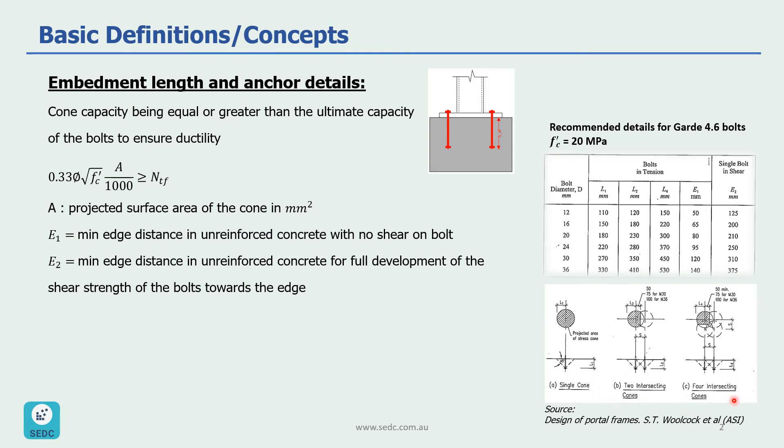We can calculate L1 which is embedment length for single cone, L2 embedment length for two intersecting cones, and L4 which is embedment length for four intersecting cones. And this value has been calculated and is shown in the book Design of Portal Frames by Woolcock et al which is published by ASI.